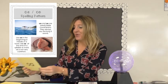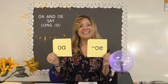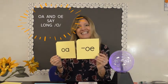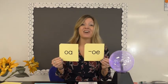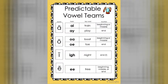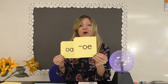We know that every single time we see AI or AY it makes the long A sound. The same is true with OA and OE — it's predictable. Every single time you see OA it says long O, and every single time you see OE it says long O. Just like our first set of predictable vowel teams, it depends on the position in the word. We use OA at the beginning and middle of a word, and we use OE only at the end.